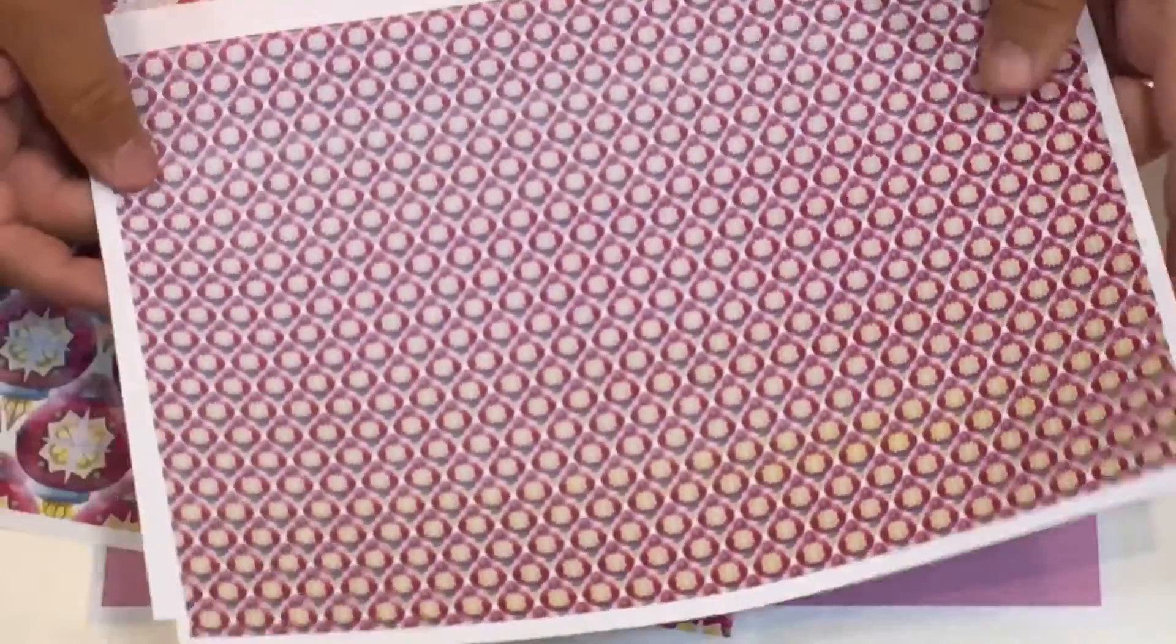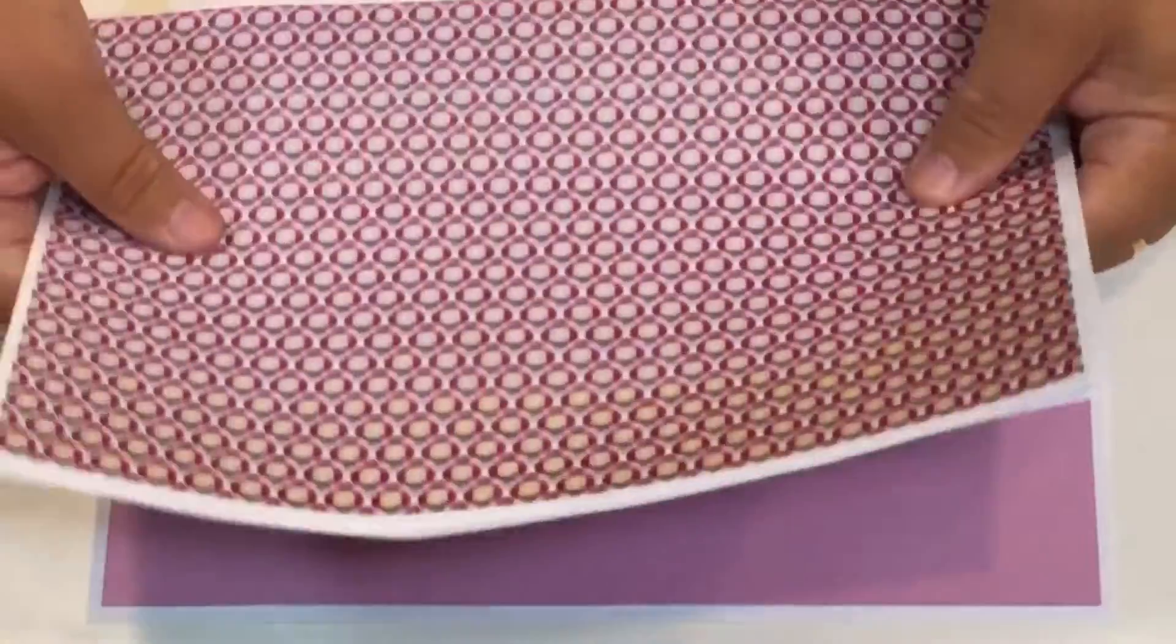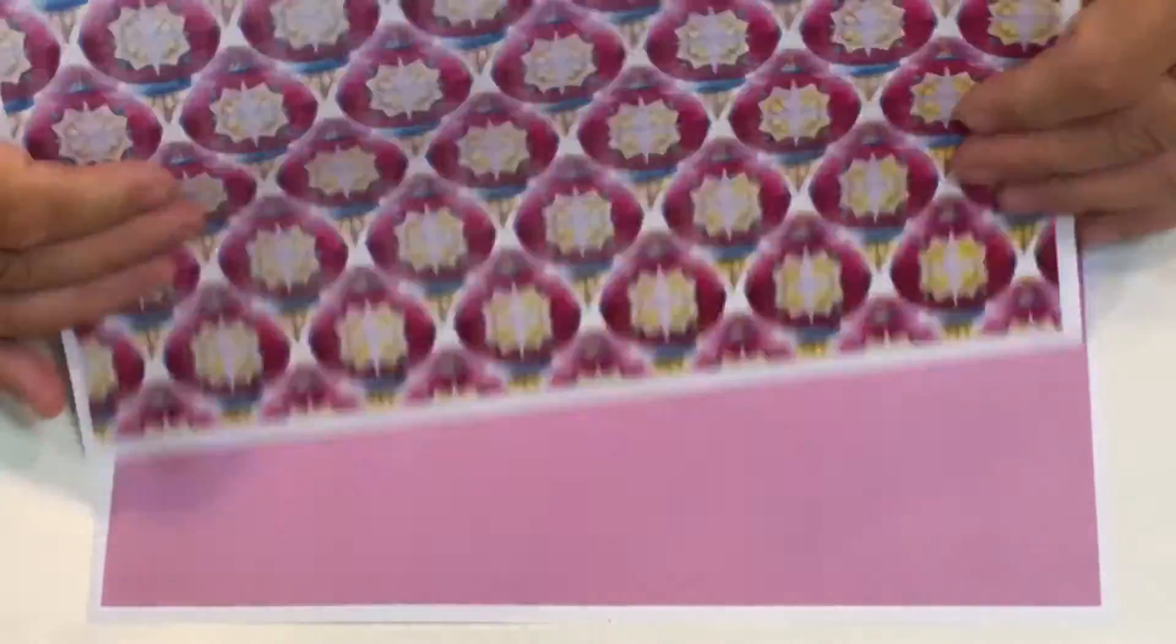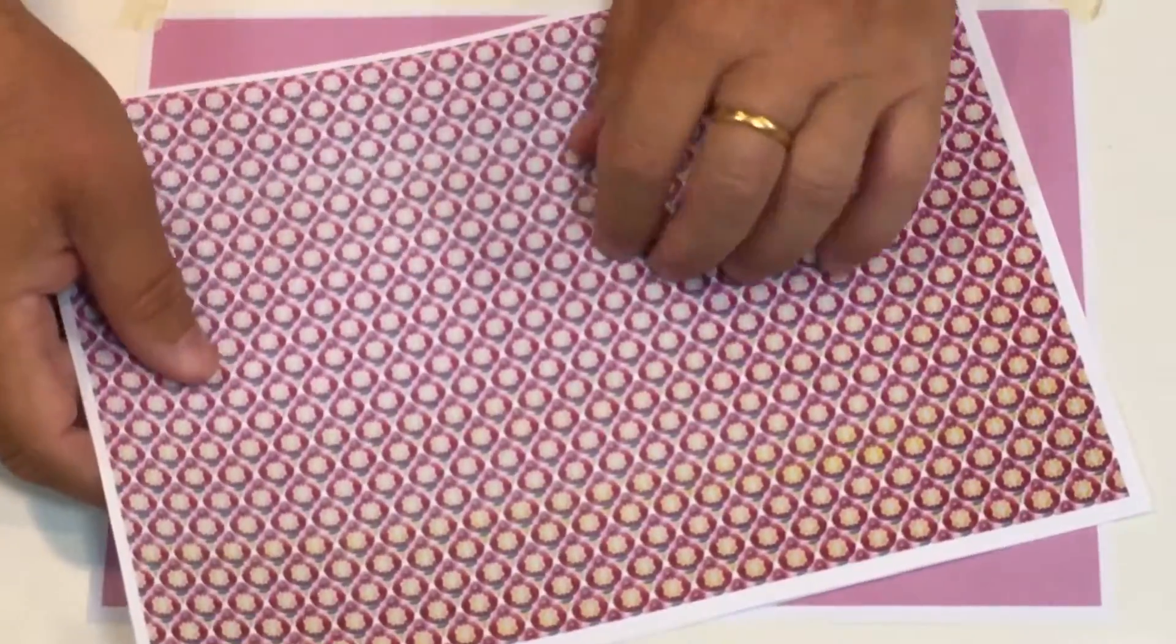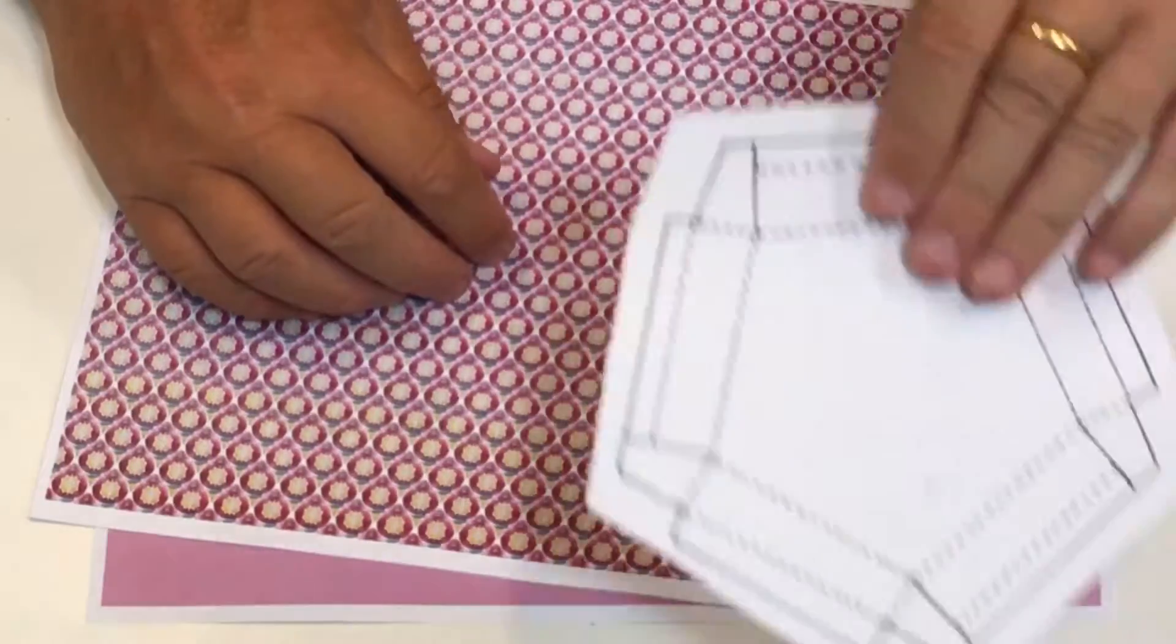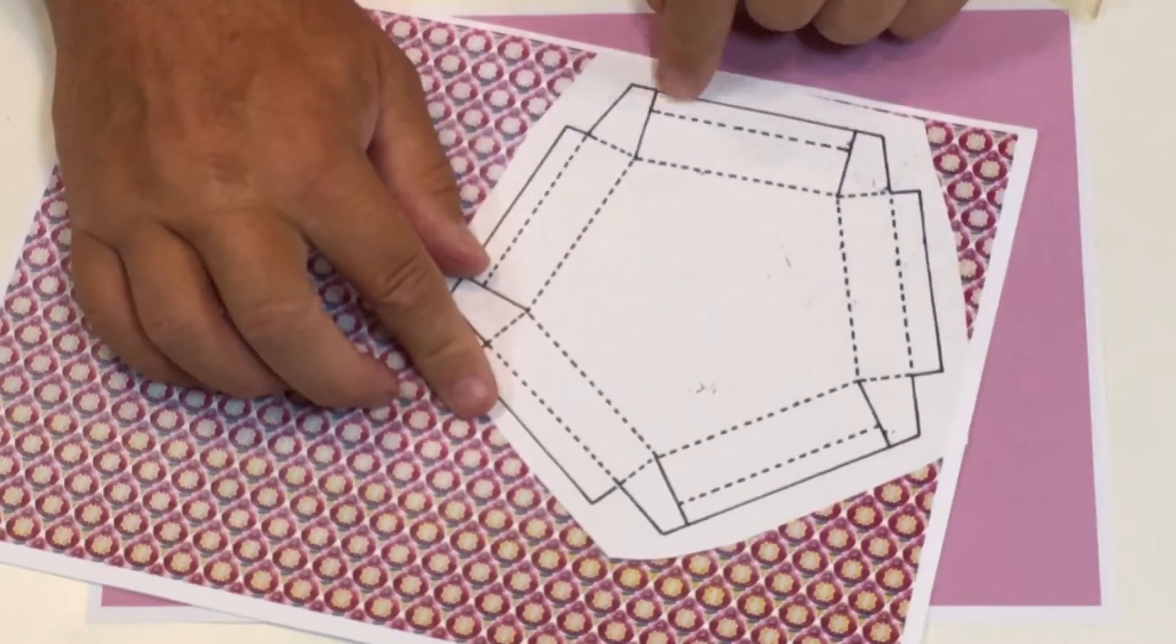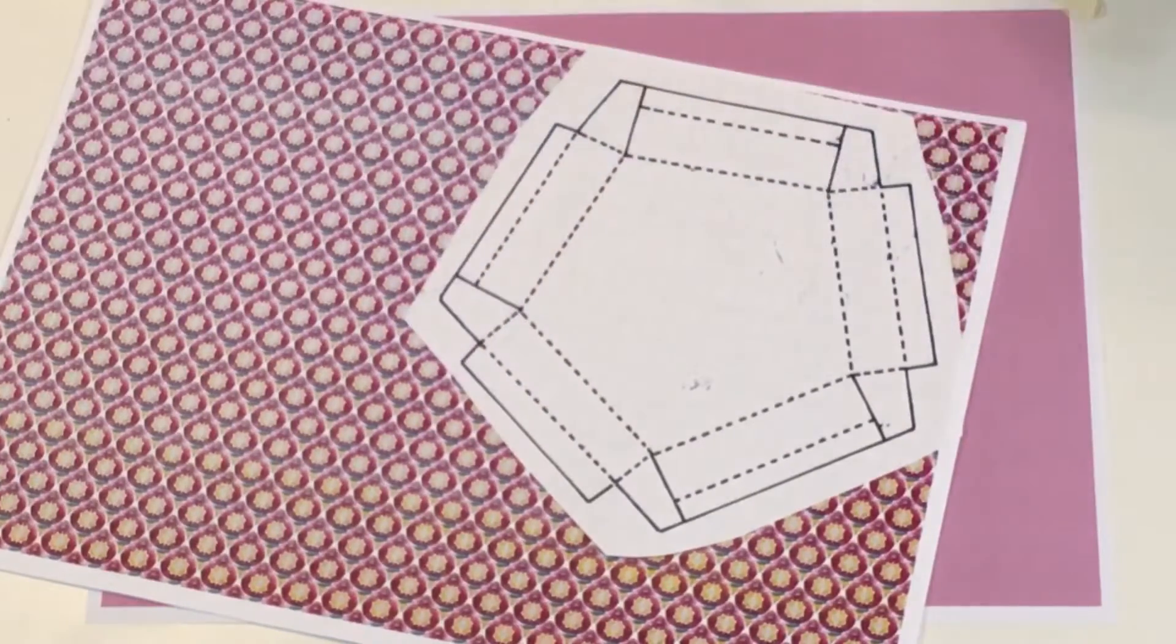I put that on the back and that on the front, so the card is in between, which gives you a nice substantial piece of card to work with. Once you've stuck those together, you put the template on and just using a little bit of masking tape, just hold it in position.